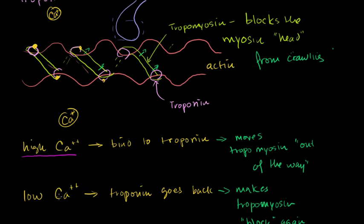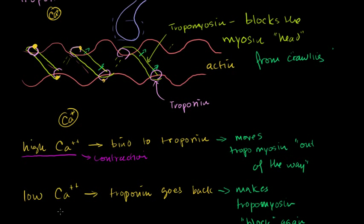Low calcium ion concentration means these troponin proteins go to their standard conformation, and they move the tropomyosin back in the way of the myosin heads, and we have no contraction. So high calcium concentration means muscle contraction, and low calcium concentration means relaxation.